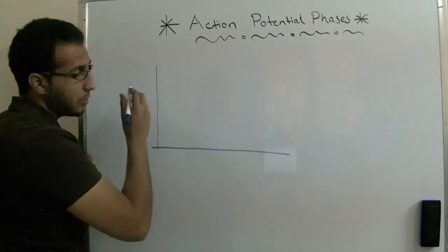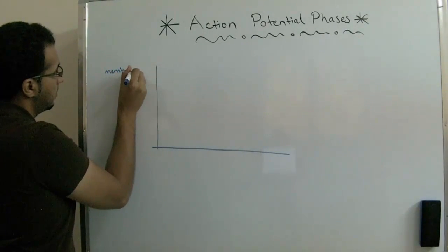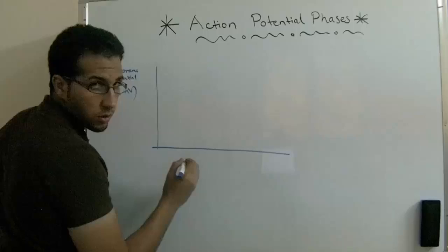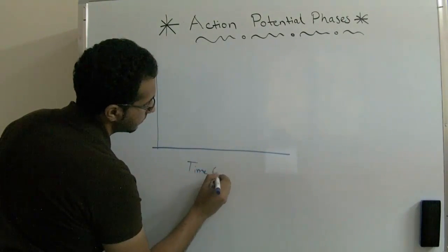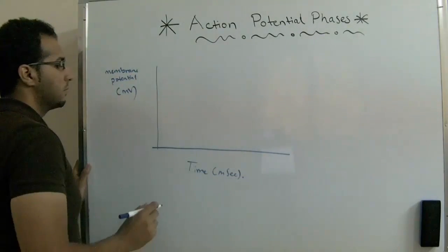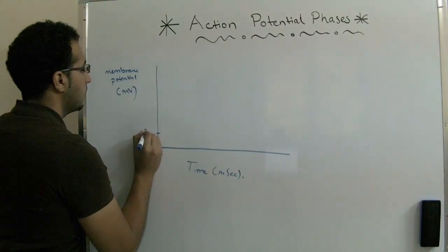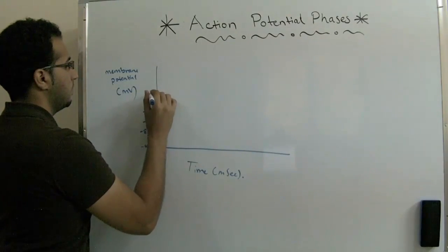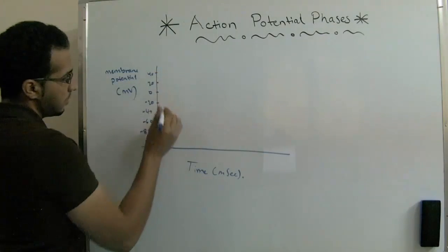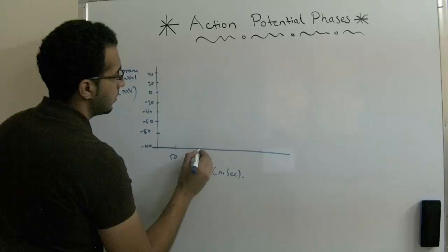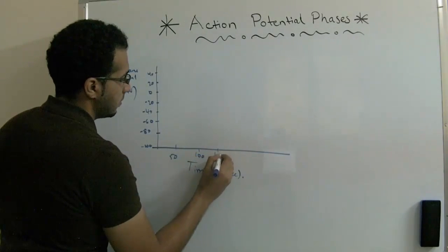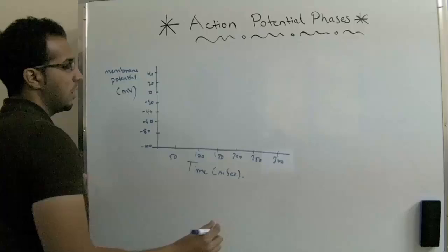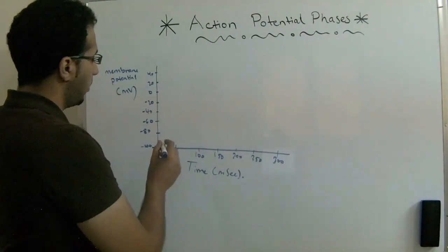Vertically we have the membrane potential in millivolts, and horizontally we have the time in milliseconds. We restart from negative 100 on the vertical axis, and for the time about 300 milliseconds. Now we're going to draw the action potential.